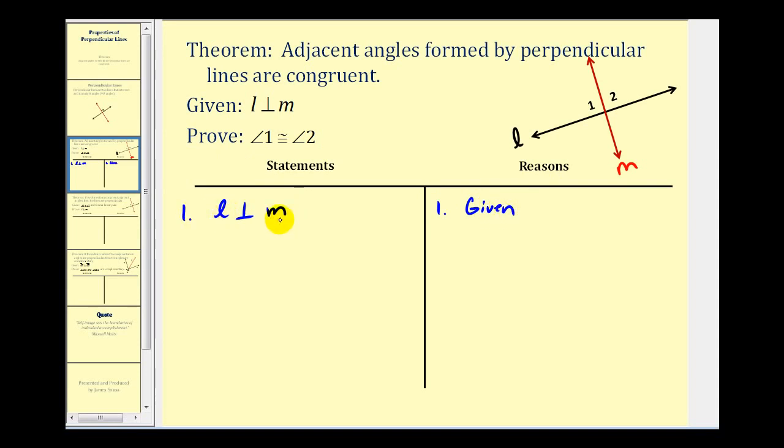And by definition if these two lines are perpendicular, angle 1 and angle 2 are right angles. This is by definition of perpendicular lines.